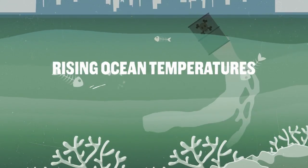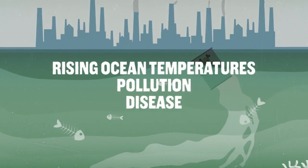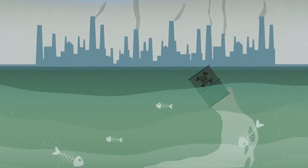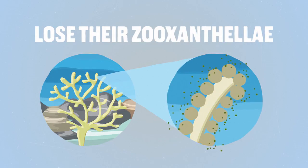Rising ocean temperatures, pollution, and disease threaten the future of coral reefs in our ocean. When water conditions change, coral bleaching can occur. Coral lose their zooxanthellae, which gives them color and provides them with nutrients to survive.